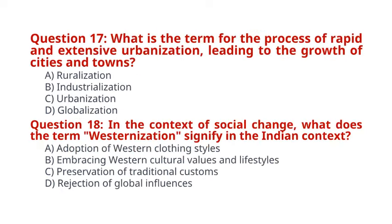Question 17. What is the term for the process of rapid and extensive urbanization, leading to the growth of cities and towns? A. Ruralization. B. Industrialization. C. Urbanization. D. Globalization. The correct answer for question 17 is option C: Urbanization.